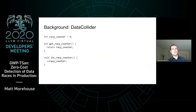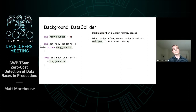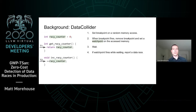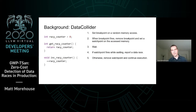GWP-TSAN uses some ideas from Microsoft Data Collider to achieve this. Data Collider works by setting a breakpoint on a random memory access. Then, when that breakpoint fires, it removes the breakpoint and sets a watchpoint on the memory that was accessed — in this case, a watchpoint is set on a race counter. It then waits, and if another thread triggers a watchpoint while waiting, it knows that a data race has occurred and reports it. If a watchpoint does not fire while waiting, it simply removes the watchpoint and continues execution as usual.